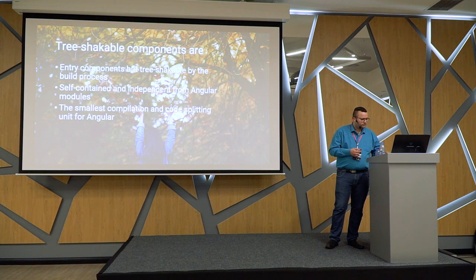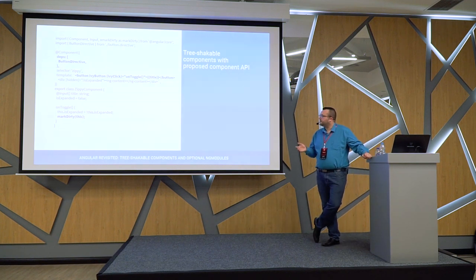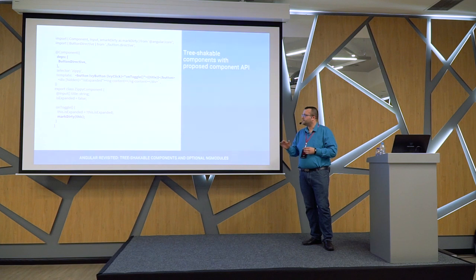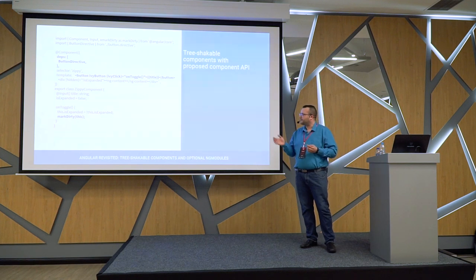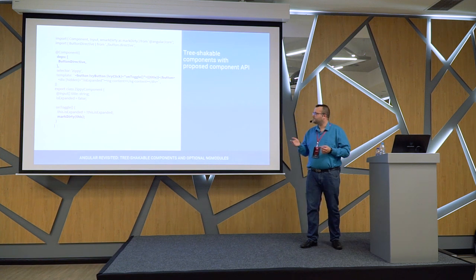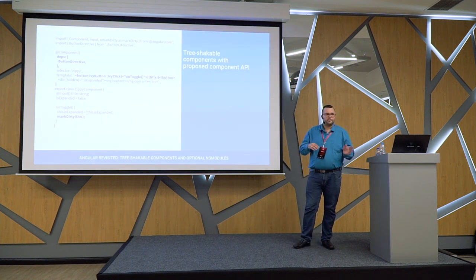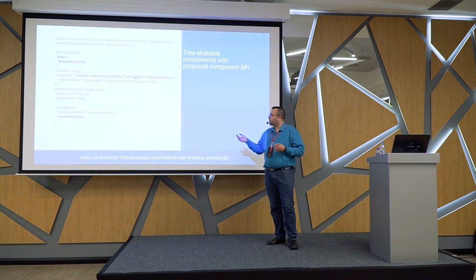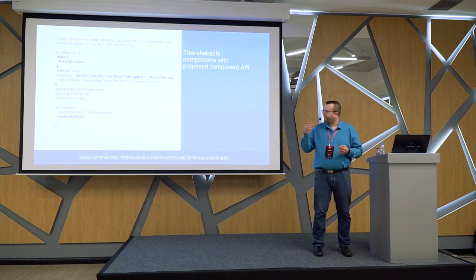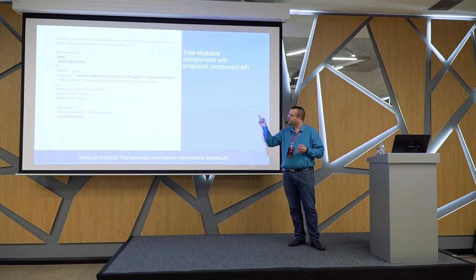But how do we actually get there? We can't get there without actually changing our code. What we're looking at here is a proposal for a component API by the Angular team — by Rob Wormald and others. It's not something you can find anywhere in the code right now, but the Angular team wants your feedback on whether this is something we like in the Angular framework. And what we can get here are actually tree-shakable components — they don't depend on Angular modules at all. But to not depend on Angular modules, you have to list all the declarable dependencies you rely on.